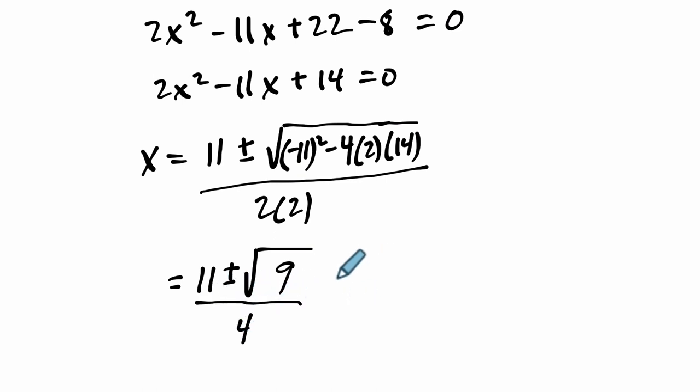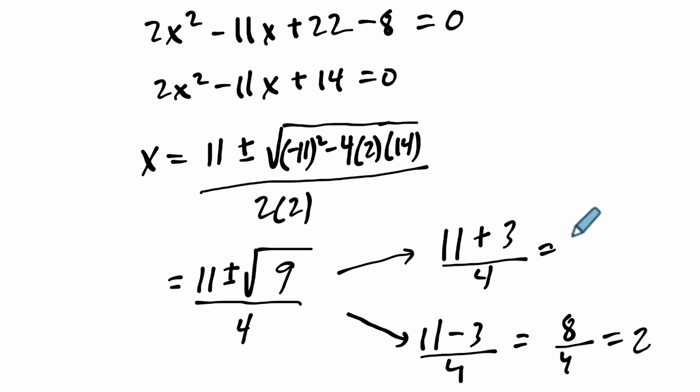Over 4. 2 times 2 is 4. So it's two things. The first one is 11 plus 3 over 4. The square root of 9 is 3. 11 minus 3 over 4. And that means 8 over 4 or 2. And then 14 over 4, which is 7 over 2.